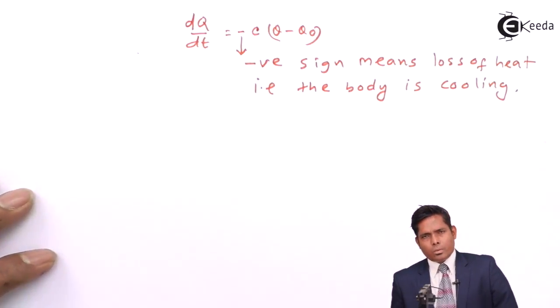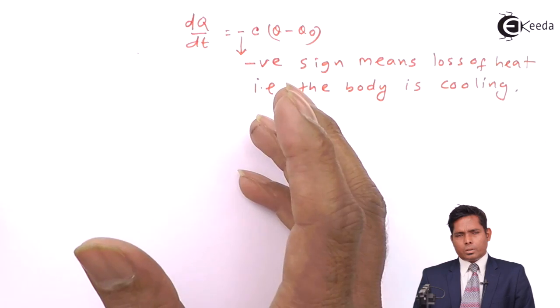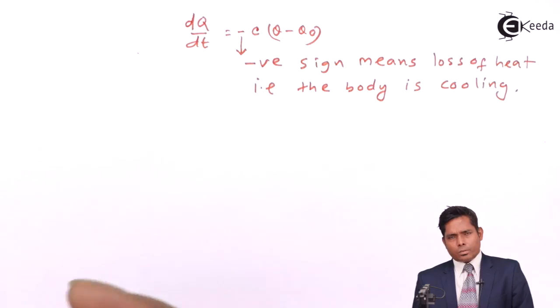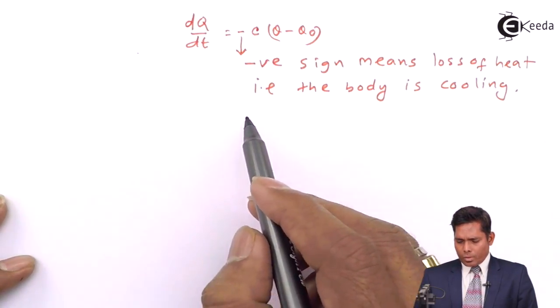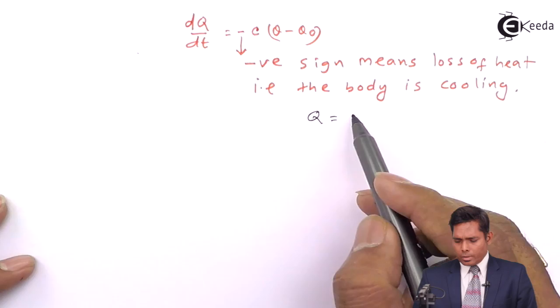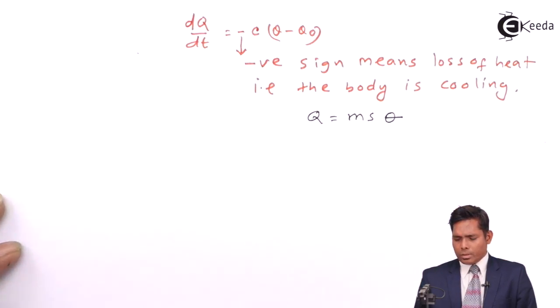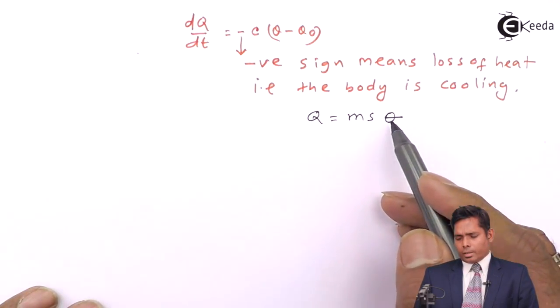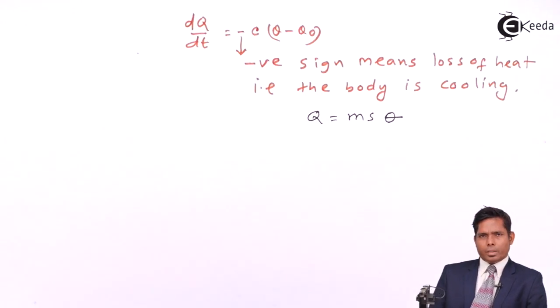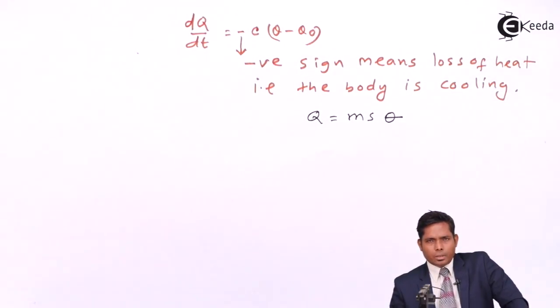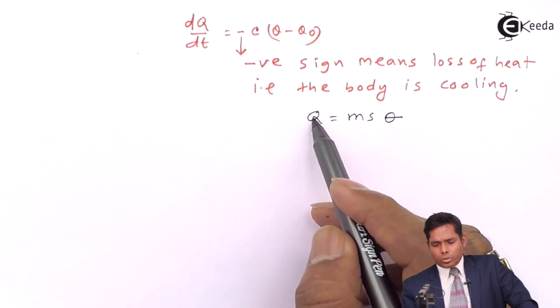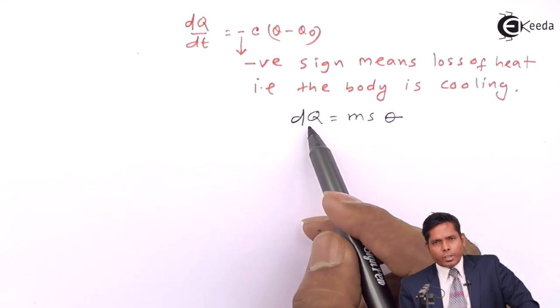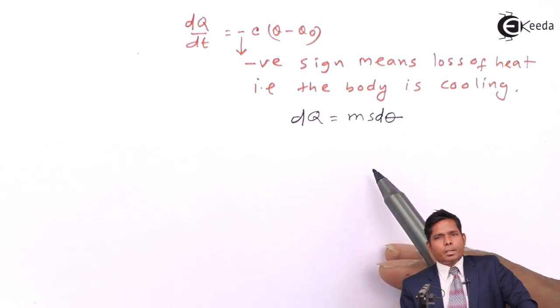Now if we want to write in terms of the body cooling, the temperature or loss of temperature, that is, in terms of cooling, we know that Q is msθ. If a body has temperature θ, and to get that temperature the amount of heat that I have supplied is Q, if I supply dQ amount of heat, then temperature rises by dθ.